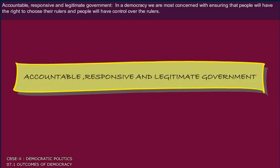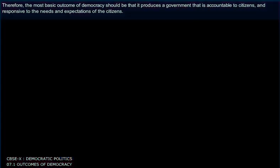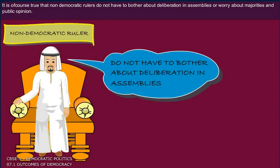Accountable, responsive and legitimate government. In a democracy, we are most concerned with ensuring that people will have the right to choose their rulers and people will have control over the rulers. Therefore, the most basic outcome of democracy should be that it produces a government that is accountable to citizens and responsive to the needs and expectations of the citizens.